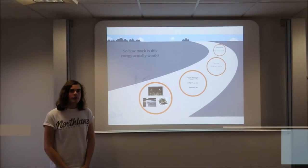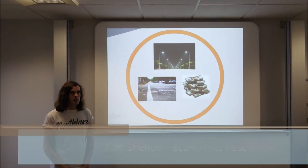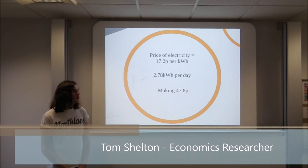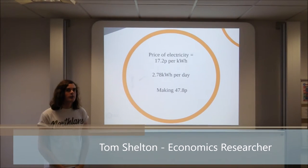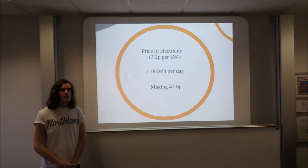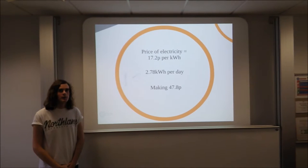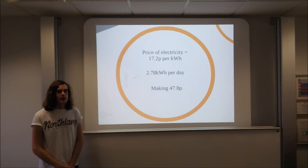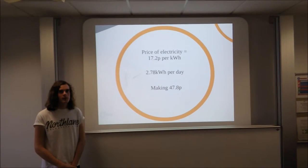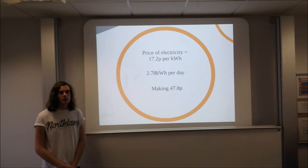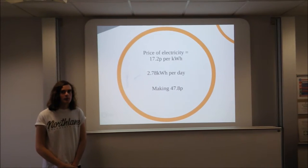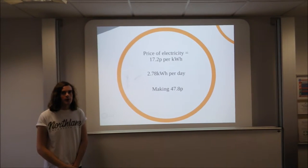So how much is this energy actually worth? In the UK, the current commercial price of electricity is 17.2 pence per kWh. Therefore, as we have previously shown, each speed bump will make 2.78 kWh per day, saving 47.8 pence.